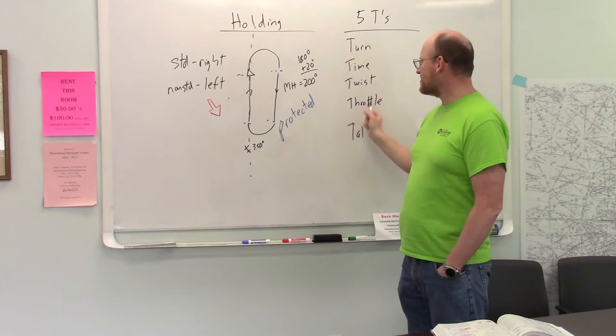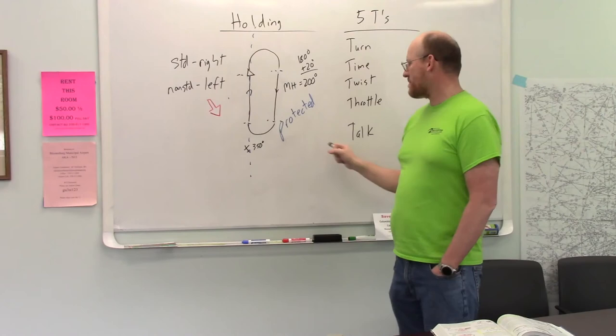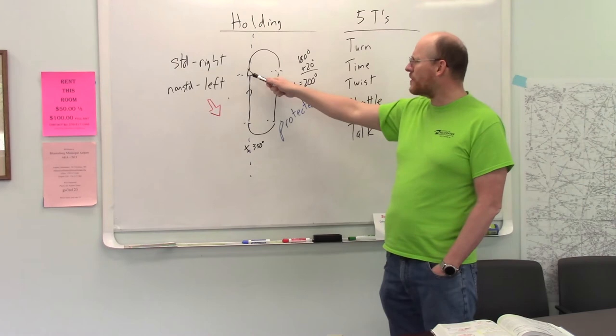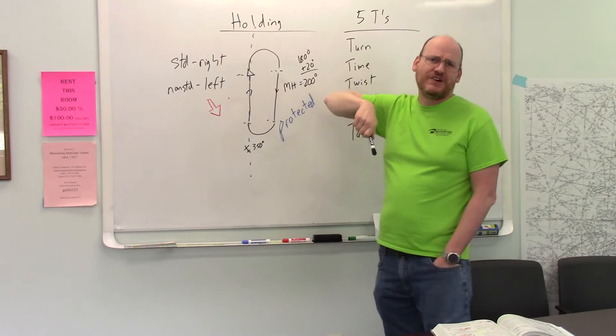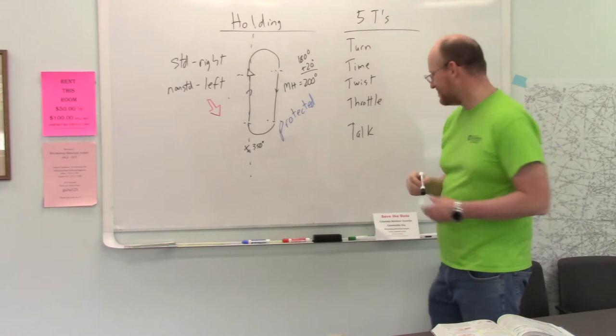Okay, so those are our five T's. Turn time, twist, throttle, part of an approach. You might have to climb or descend. Once you're established and you've got your radios all set, then you can possibly descend and then you can tell ATC about it if they asked you to report a certain note. Maybe they said, report, you know, again, at the end of this hold, you're going to go in for an approach often. They'll say report leaving the hold. Okay, how do I get in the hold?